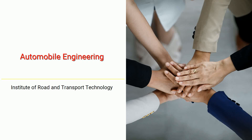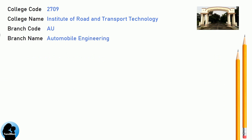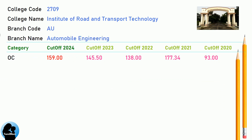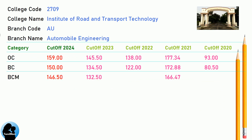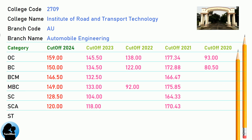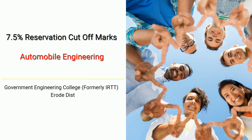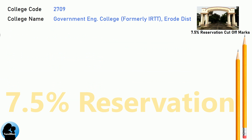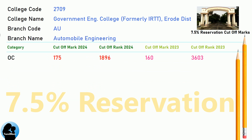DNEA Cut-Off for Institute of Road and Transport Technology in Automobile Engineering. DNEA 7.5 Reservation Cut-Off for Government Engineering College, formerly IRTT, Erode District in Automobile Engineering.